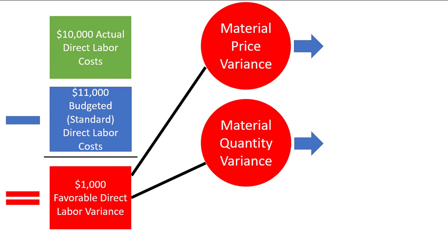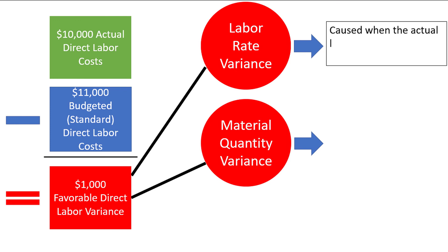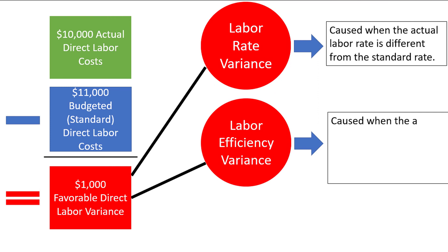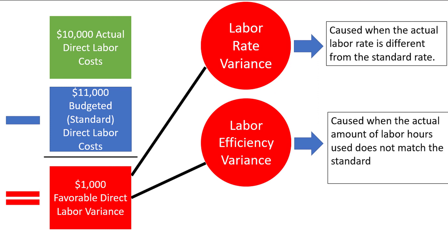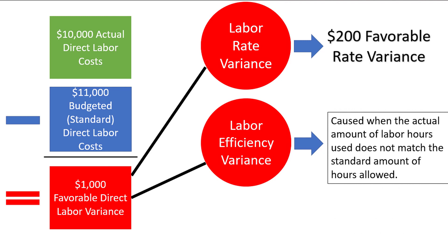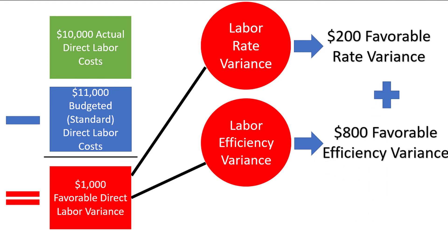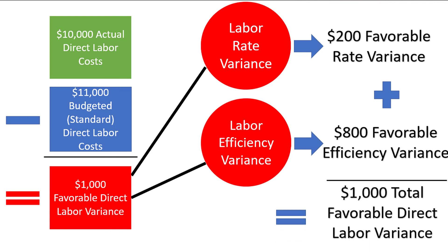Instead of a material price variance, we have a labor rate variance, which is caused when the actual labor rate is different from the standard rate. So if we had to pay our employees a higher wage rate due to overtime work, that might cause a labor rate variance. Instead of a material quantity variance, we have a labor efficiency variance, which is caused when the actual amount of labor hours used does not match the standard number of hours allowed. In this case, let's assume a $200 favorable rate variance and an $800 favorable efficiency variance, which add up to the $1,000 favorable direct labor variance.